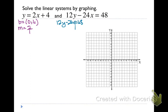So we have 12y minus 24x equals 48. I know I'm going to have to add 24x to both sides. That's going to give me 12y on the left equals 24x plus 48. Now I have to get rid of my 12, so I'm going to divide everything by 12. And I'm going to get y equals 2x plus 4.